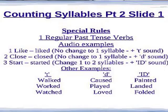Number one: the verb LIKE is changed to LIKED in the past tense. We add a consonant sound T. The number of syllables doesn't change — the sound just gets longer. Number two: the verb CLOSE is changed to CLOSED in the past tense. Again, the number of syllables doesn't change but the sound gets longer.